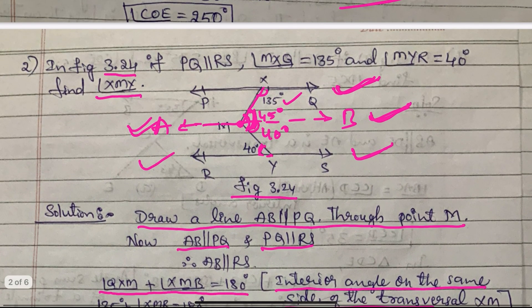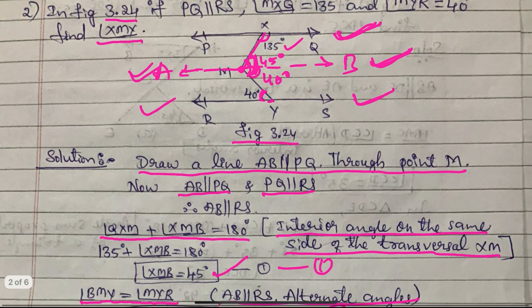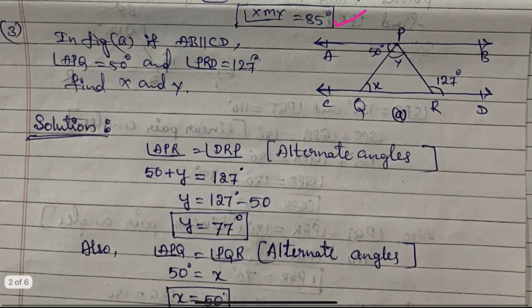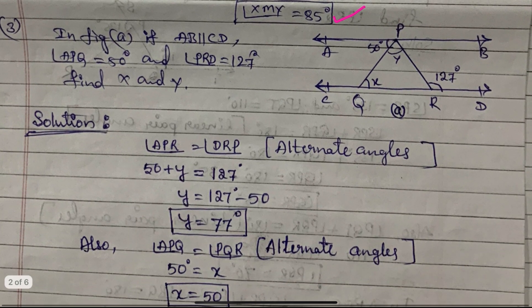Next problem. In figure A, AB is parallel to CD. Angle APQ is given as 50 degrees and angle PRD is given as 127 degrees. Find angle X and angle Y.